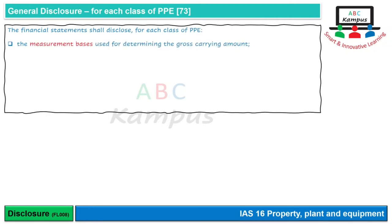General disclosures mein financial statements mein for each class of Property, Plant and Equipment sabse pehle batani hai Measurement Basis. IAS 16 do allow karta hai — ya to Cost Model ya phir Revaluation Model. Jis class ke liye jo model aap use kar rahe ho, wo apne disclosure mein batayenge.